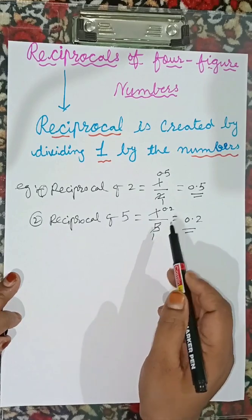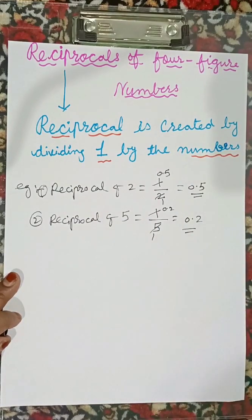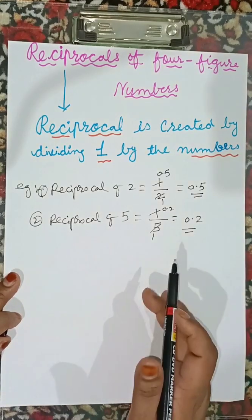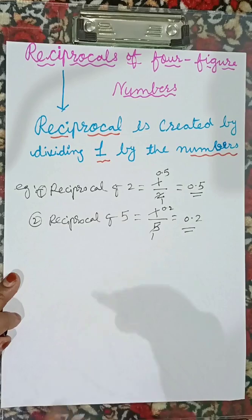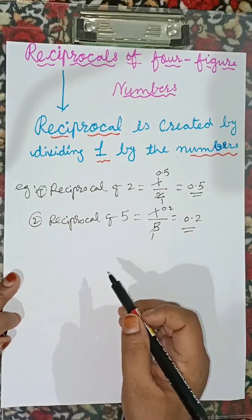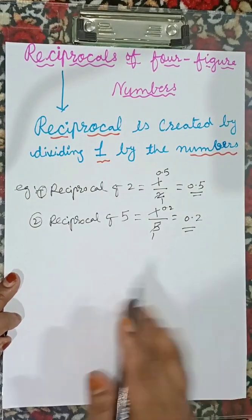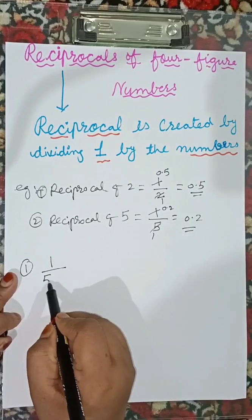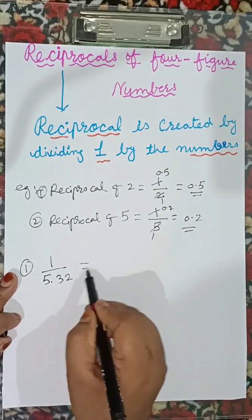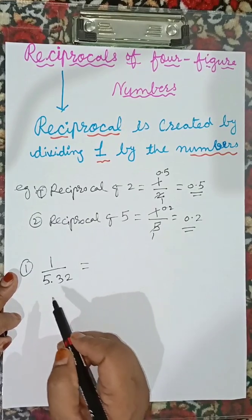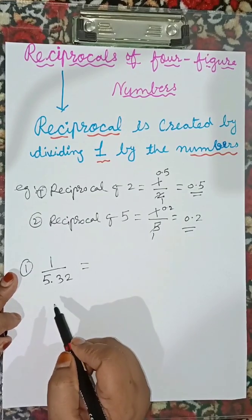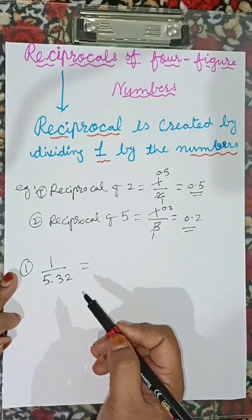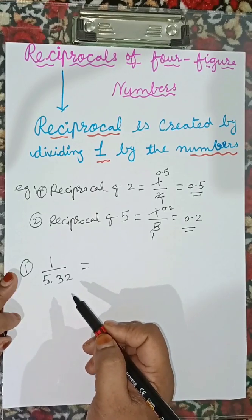If we have a four-digit number, how do we solve it? Using the log table will save us more time and give us greater accuracy. For example, if we solve the number 5.32 using the log table, we will save time and maintain accuracy.